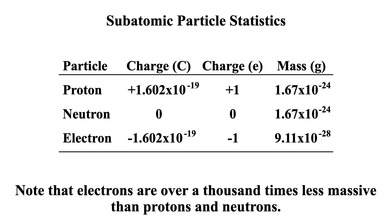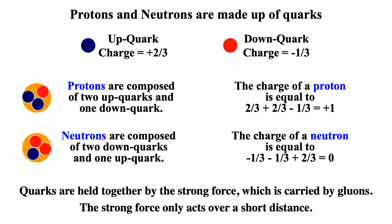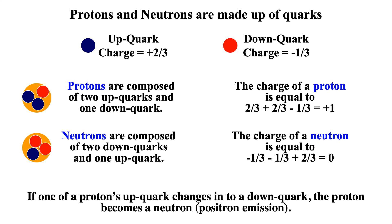Protons are composed of two up quarks and one down quark. An up quark has a charge of plus two-thirds; a down quark has a charge of minus one-third. Two up quarks plus one down quark gives a net charge of plus one, so protons have a plus one charge. Neutrons are composed of two down quarks and one up quark: two down quarks give minus two-thirds and one up quark gives plus two-thirds, so neutrons are charge neutral.